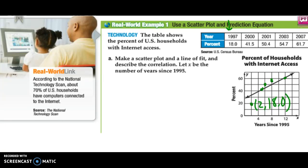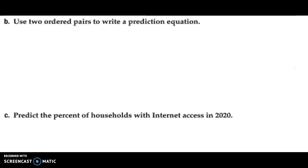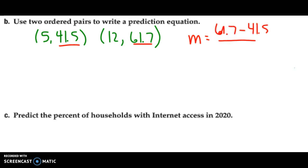So, we use the two points that are on the line of best fit to make our prediction equation. Those are the points: 5, 41.5, and 12, 61.7. Those are the two points that I graphed my line of fit right through. So, if I'm going to make my prediction equation, first thing I have to find is my slope. So, I'm going to do y2 minus y1 all over x2 minus x1. Go to my calculator, put that in, and I get about 2.89. This is my slope.